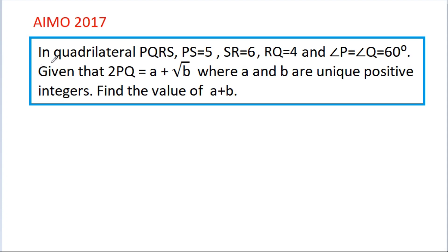We have given that in quadrilateral PQRS, PS is 5, SR is 6, RQ is 4, and angle P is equal to angle Q, that is 60 degrees. Given that 2PQ is equal to A plus A square root of B, where A and B are unique positive integers, find the value of A plus B.